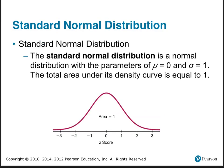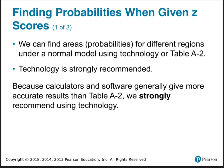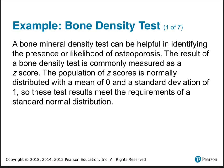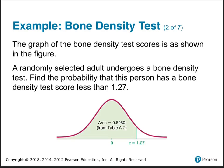The standard normal distribution is where you put zero in the middle and you make sigma — sigma is the standard deviation — equal to one. We can find probabilities; we're going to use our calculator. Here's a bone density example. A bone mineral density test can be helpful in identifying the presence or likelihood of osteoporosis. The result of a bone density test is commonly measured as a Z-score. The population of Z-scores is normally distributed, mean zero, standard deviation one.